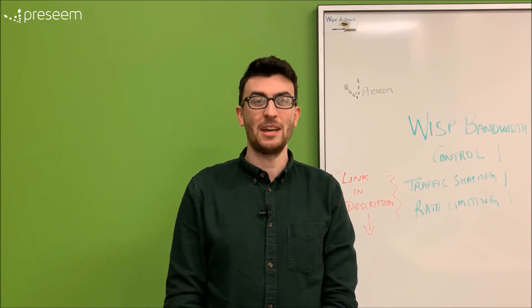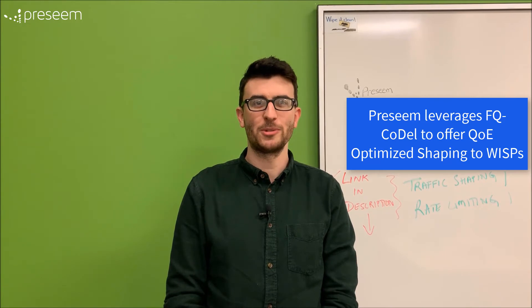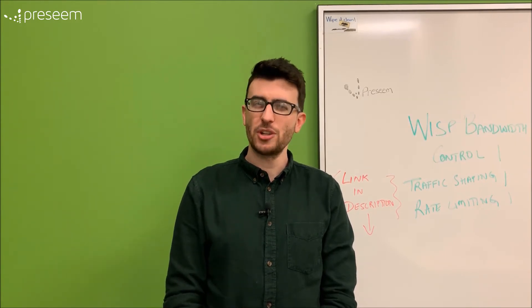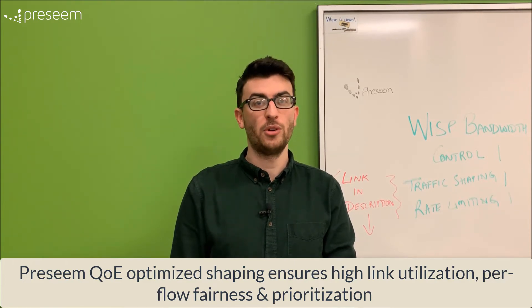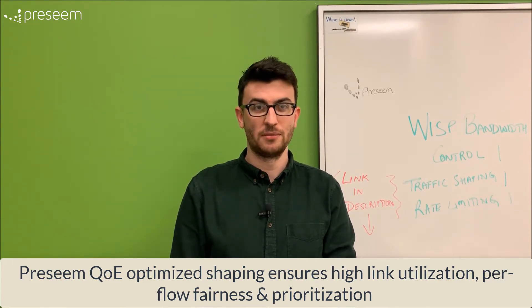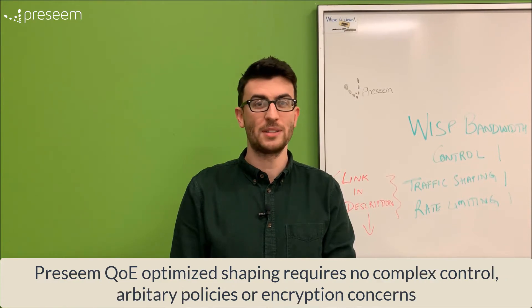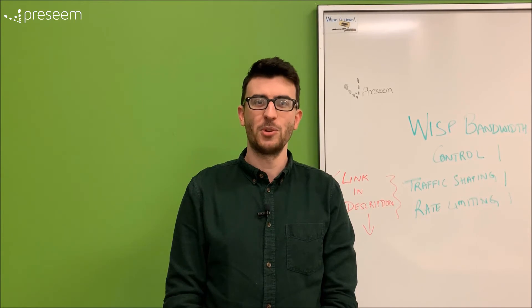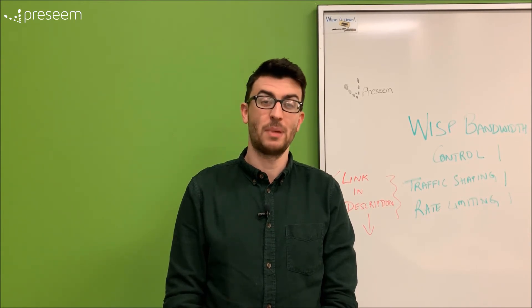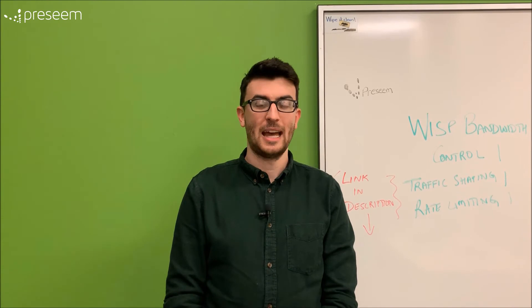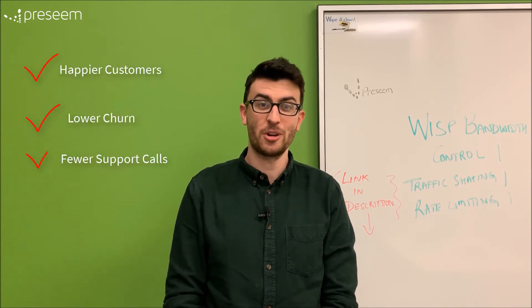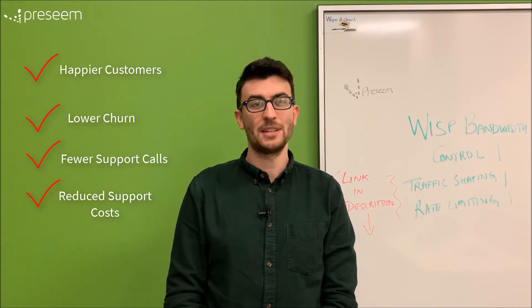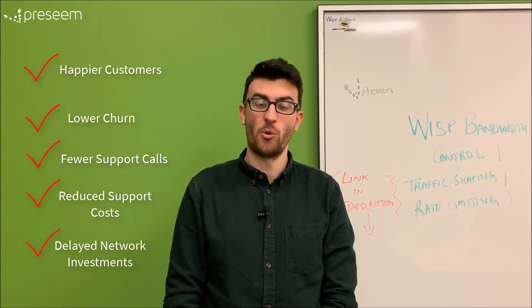Preseem leverages FQ-CoDel to offer a QoE-optimized bandwidth control solution to WISPs that keeps just the right amount of queue in the device to ensure high link utilization, ensures per-flow fairness and prioritization, and requires no complex policies, arbitrary rules, or encryption concerns. The result: WISPs that deploy Preseem's QoE-optimized shaping based on FQ-CoDel and AQM techniques get happier customers, lower churn, fewer support calls, fewer truck rolls and support costs, better bandwidth utilization, and delayed network investments or upgrades.